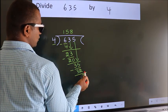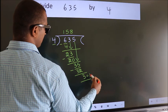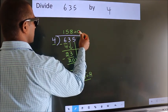No more numbers to bring down. So we stop here. This is our remainder. This is our quotient.